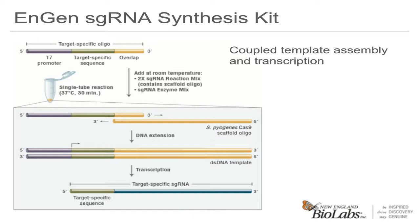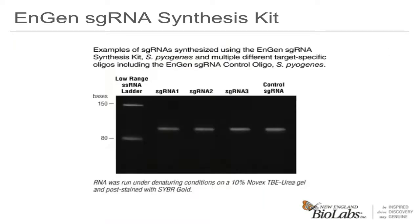The end product of the sgRNA synthesis kit is microgram quantities of sgRNA. Here we have a gel of four different sgRNAs, including the control that is provided in the kit. We have tested hundreds of sgRNAs, and although they do vary in yield, most fall within the 15 to 25 microgram range. Even the most difficult sgRNAs we could design still produced 4 to 5 micrograms of RNA at a minimum, and some went as high as 50 micrograms. We have designed a web tool to make designing the oligos painless.